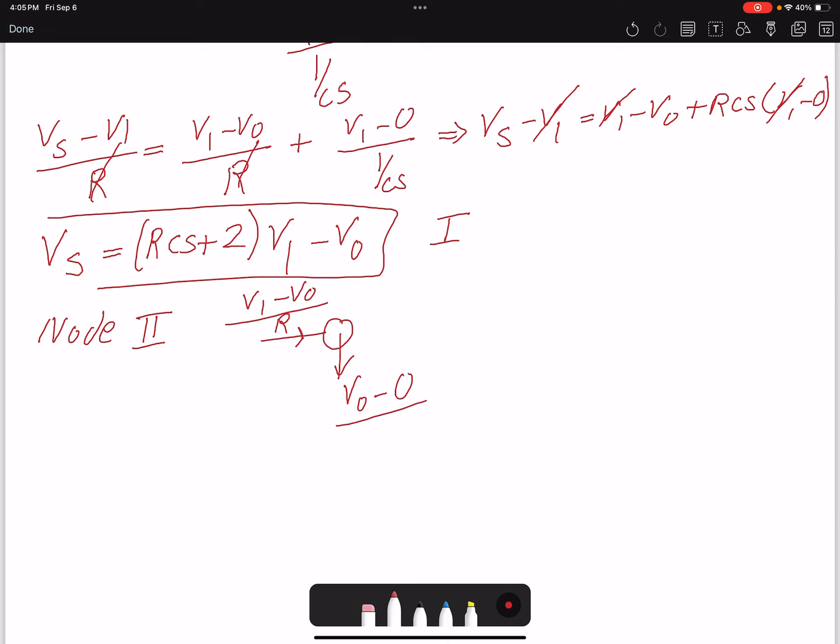V0 minus 0, that is grounded, over 1/Cs. So we write: (V1 - V0)/R equals V0/(1/Cs). I can find V1: V1 minus V0 equals RCs·V0, so V1 equals (1 + RCs)V0. I'll call that my equation 2.